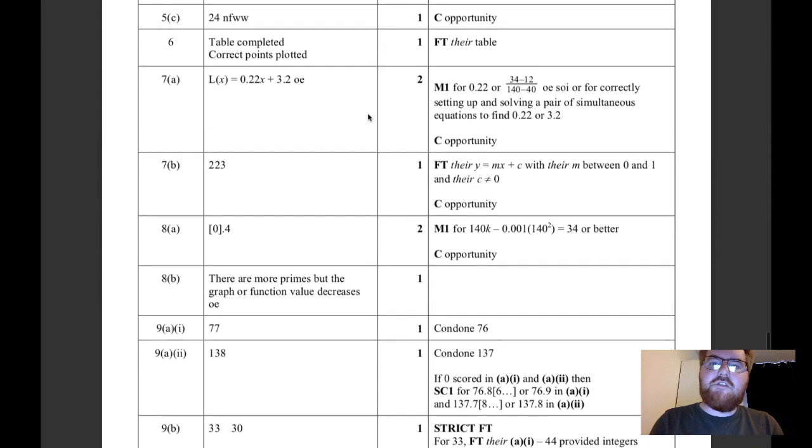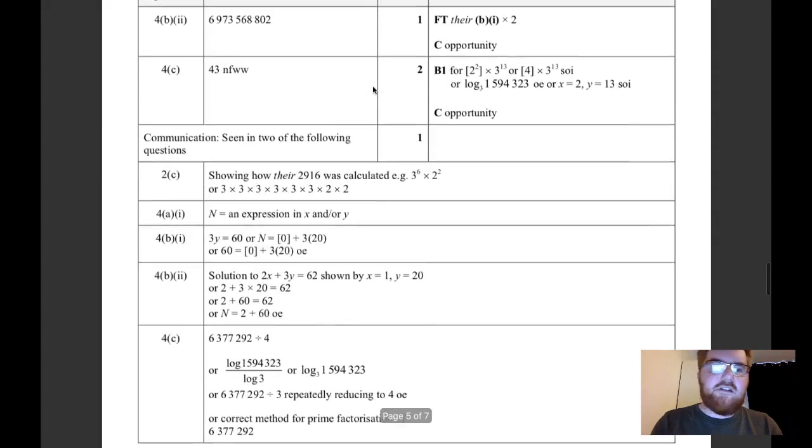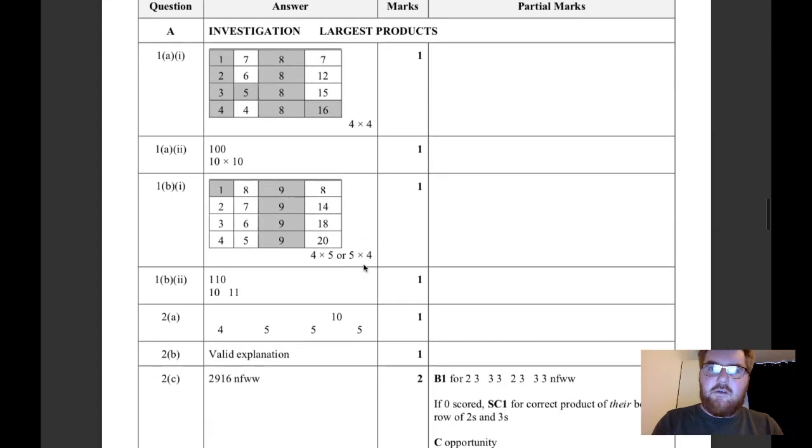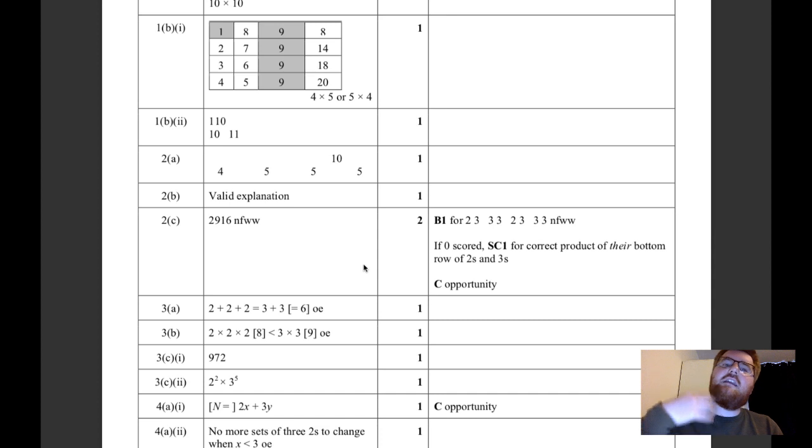Another key point about the paper: if you look at the mark scheme, most questions are either one mark, which is kind of obvious because it's just filling in gaps or writing a number, or two mark questions for maybe a little bit of working and then the answer correctly labeled. Very rare do they give you more than two marks for any part of a question.